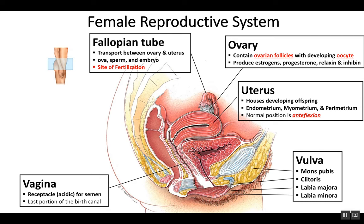Finally, the external organs, collectively called the vulva, include the mons pubis — which is a layer of adipose tissue anterior to the pubic symphysis, which joins the two hip bones anteriorly — the clitoris, the labia majora, and the labia minora. These collectively form the female vulva.